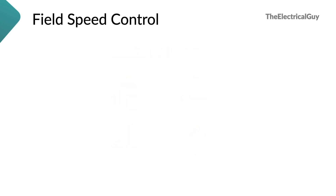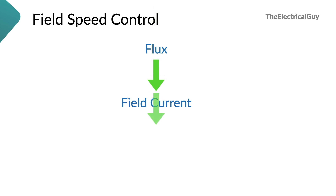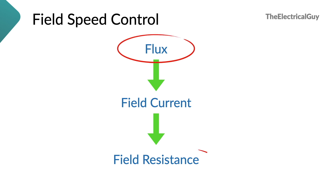To control the speed in this method, we need to control the flux. Now let's do some back-calculation. To control the flux, we need to control the field current, because controlling field current ultimately controls the flux. To control the current, we need to control the field resistance, provided the voltage is constant. If voltage is constant and you vary the field resistance, the field current will change, which will ultimately cause a change in flux. So to control the flux, we actually need to control the field resistance — once field resistance is controlled, flux and hence the speed of the DC motor come under control.